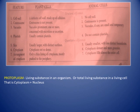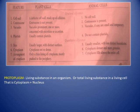Differences between plant and animal cells: Plant cells have a definite cell wall made of cellulose; animal cells have no cell wall. Centrosome is absent in plant cells but present in animal cells. Vacuoles are prominent and large in plant cells; in animal cells they are very small and temporary. Plastids are present in plant cells but absent in animal cells.